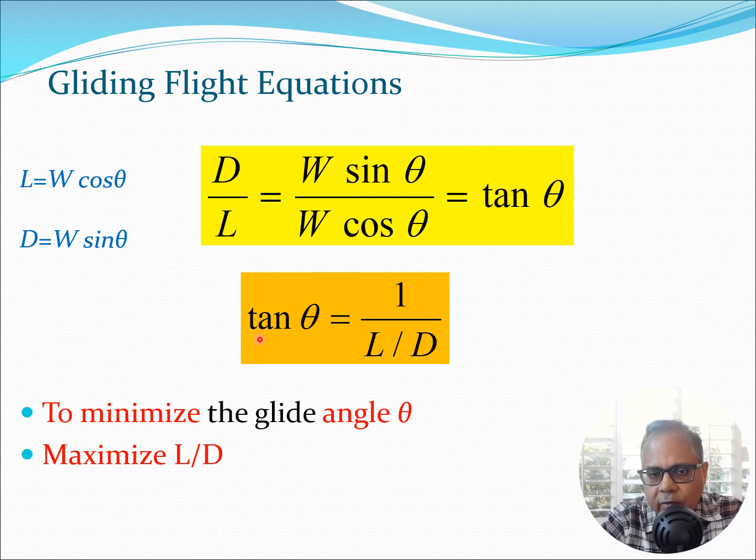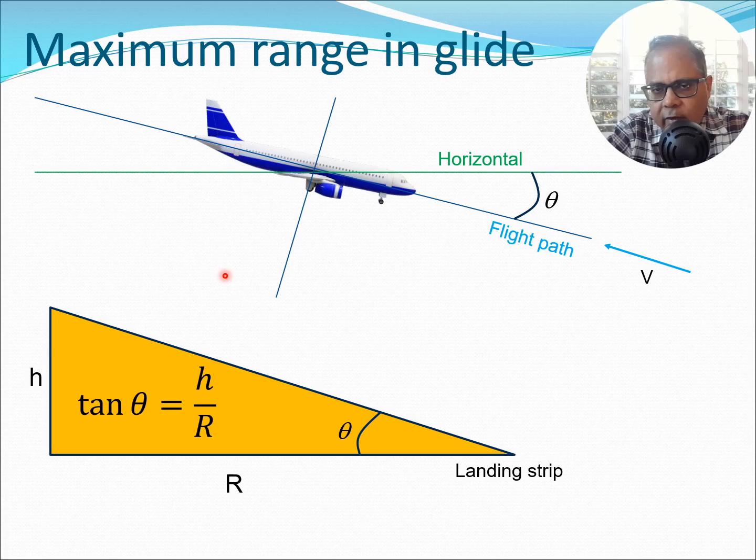Now like I mentioned before you want a smooth glide path. So you want theta to be minimum which of course would mean that tan theta would be minimum also. So if you want to minimize the angle theta, minimize tan theta, then you need to maximize L/D. That becomes a condition of aircraft design or wing design and also you need to fly this aircraft at a velocity such that L/D gets maximized.